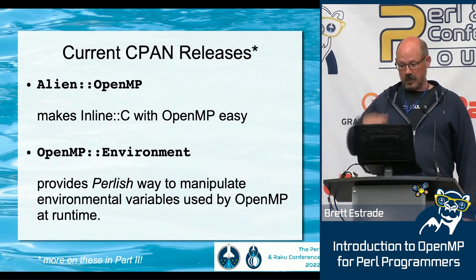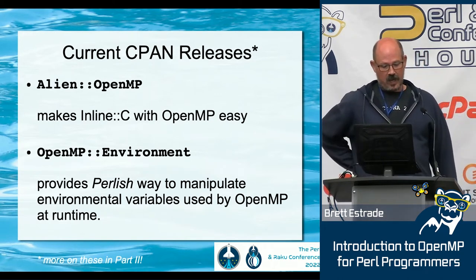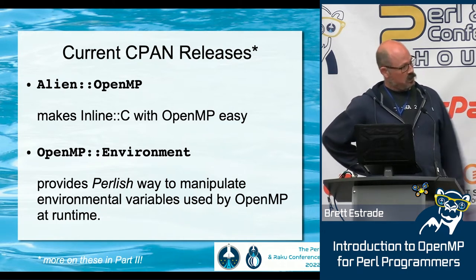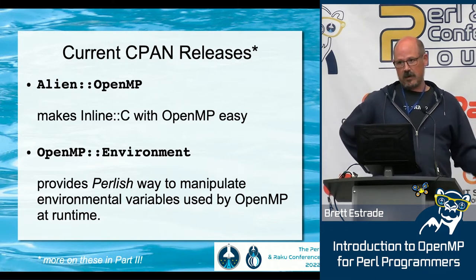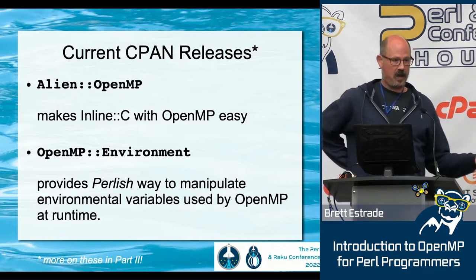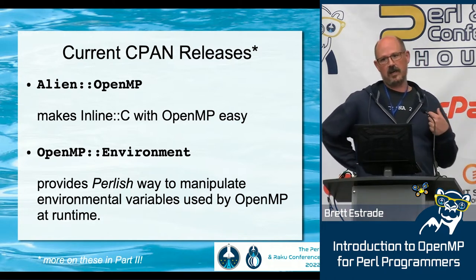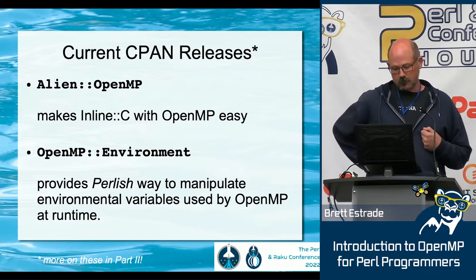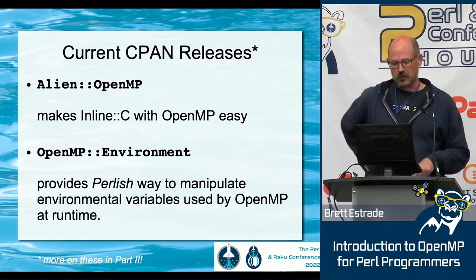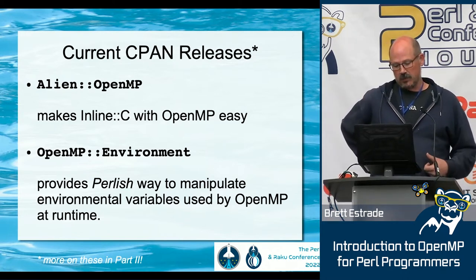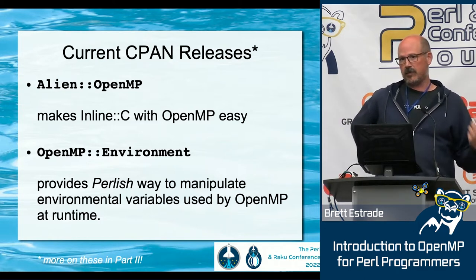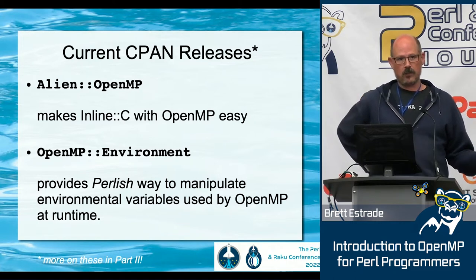We've got two current releases on CPAN. The first one is Alien::OpenMP, which makes writing C code using Inline::C very easy, because in order to invoke OpenMP you need a couple of flags and an include header file in your C code. The other one is OpenMP::Environment, which was actually the first module created for this project. It allows you to programmatically update the environmental variables that the OpenMP runtime works with.